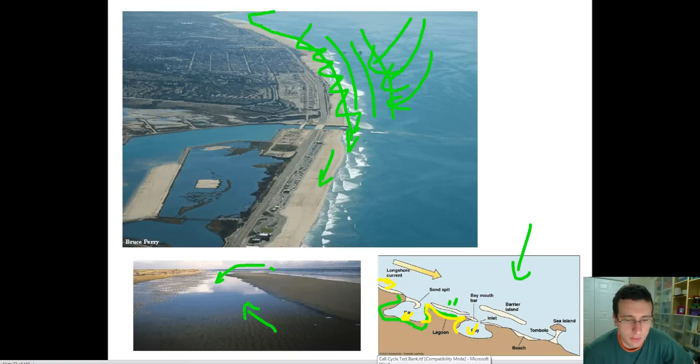That's longshore currents forming sand spits, barrier islands, and lagoons. And they also interact with bays as well.